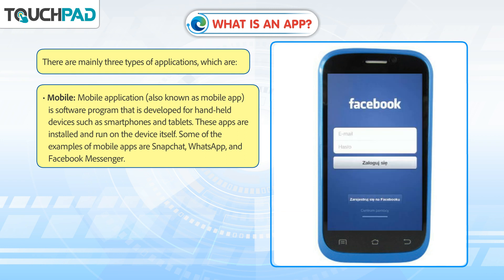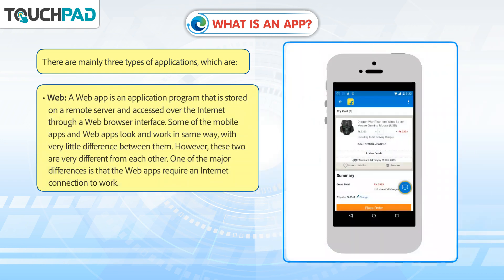A web app is an application program that is stored on a remote server and accessed over the internet through a web browser interface. Some of the mobile apps and web apps look and work in the same way with very little difference between them. However, these two are very different from each other. One of the major differences is that web apps require an internet connection to work.